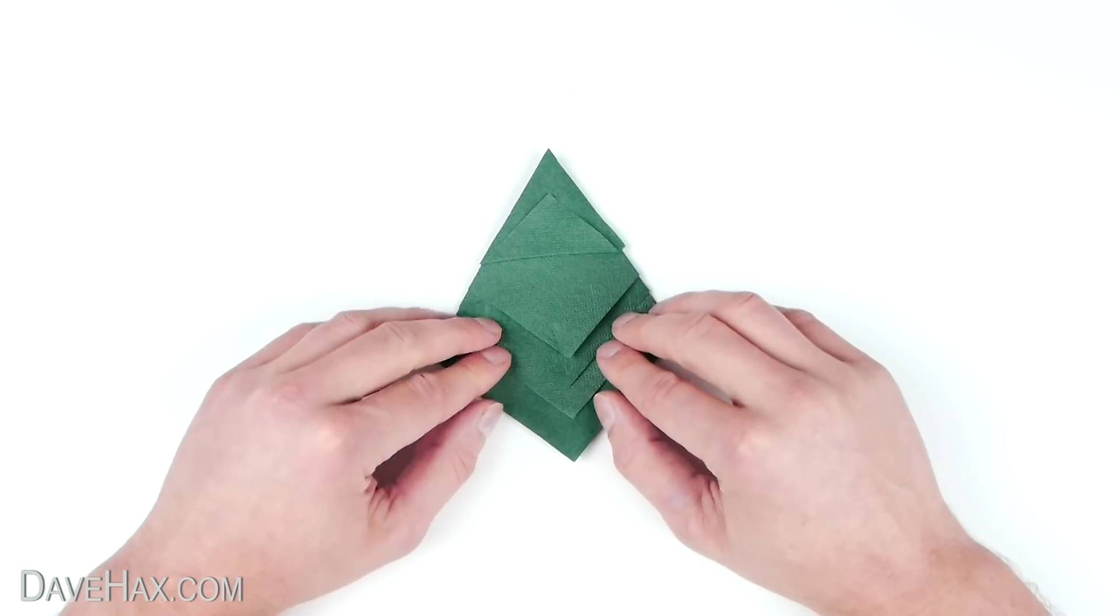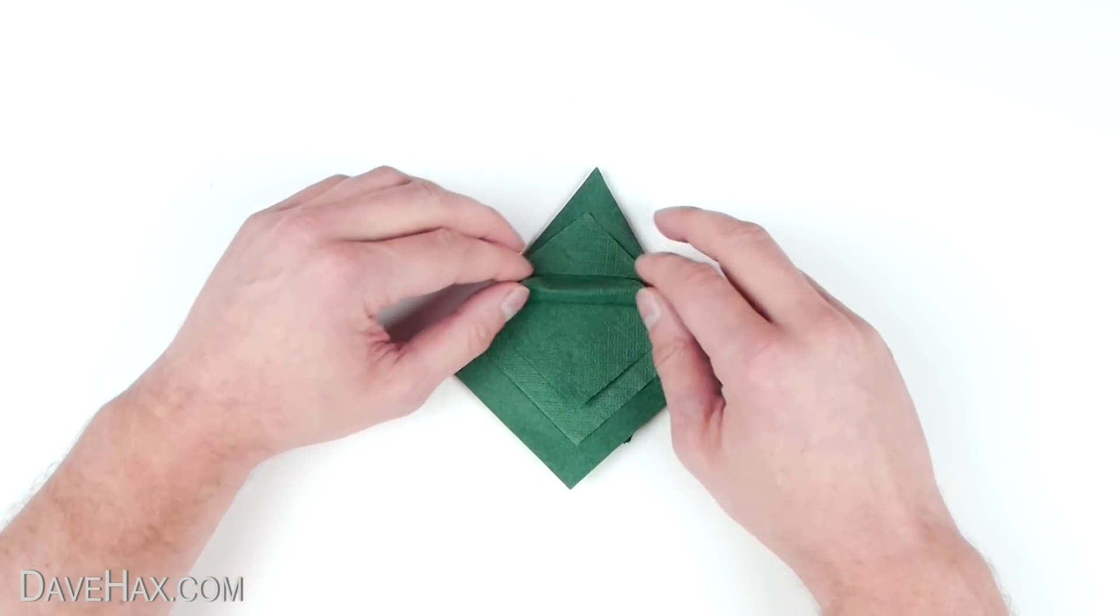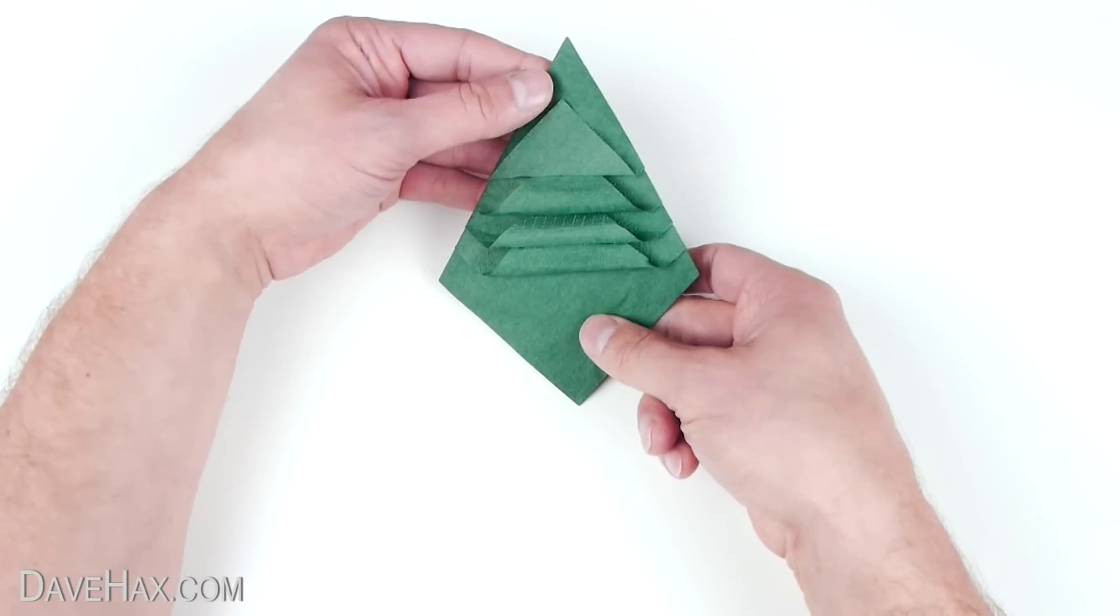Then take the next leaf down and tuck it under the leaf above to form a roll. Do this with all three and you should have something which looks like this.